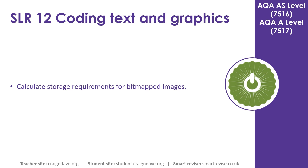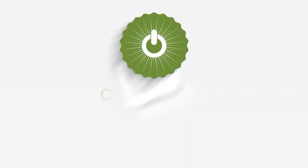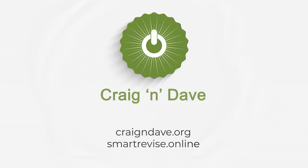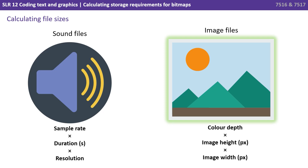In this video we look at how to calculate the storage requirements for bitmap images. When calculating the size of multimedia files, you need to be aware of the formula for calculating the size of a sound file and an image file. In this video we're going to focus on image files, and for bitmaps the formula is: colour depth times the image height in pixels times the image width in pixels.